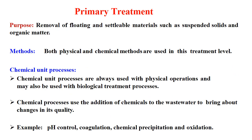In primary treatment, the purpose is removal of floating and settleable materials such as suspended solids and organic matter. Both physical and chemical methods are used. Chemical unit processes are always used with physical operations and may also be used with biological treatment. Chemical processes involve the addition of chemicals to wastewater to bring about changes in its quality — examples include pH control, coagulation, chemical precipitation, and oxidation.